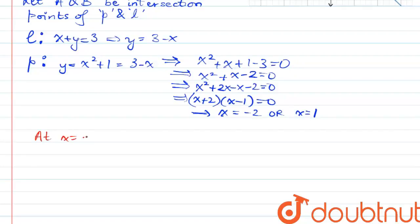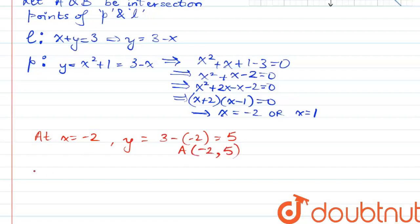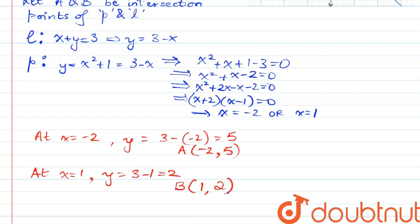At x is equal to negative 2, y is equal to 3 minus negative 2, which is 5. This will be point A, which is negative 2 comma 5. And at x is equal to 1, y is equal to 3 minus 1, which is equal to 2, which means this will be point B: 1 comma 2.